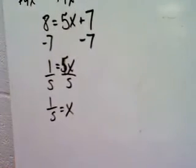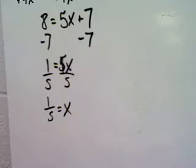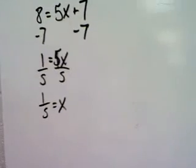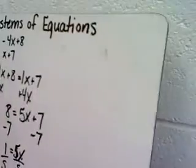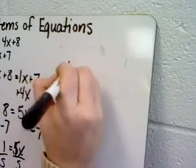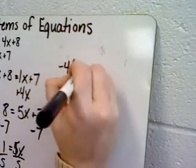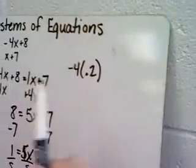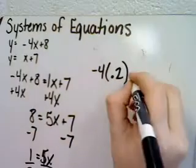Or you could have had the decimal answer of 0.2 equals x. That would be equally acceptable. Now I'm going to find the y value that corresponds with this. I'm just going to substitute in the 0.2 or the 1/5 for the variable x in my original equations.